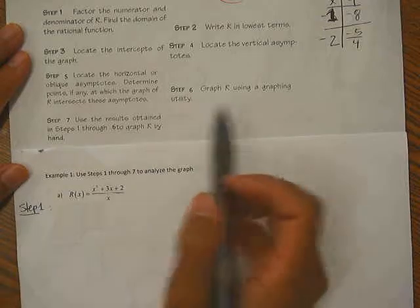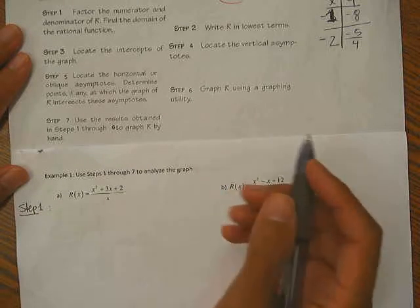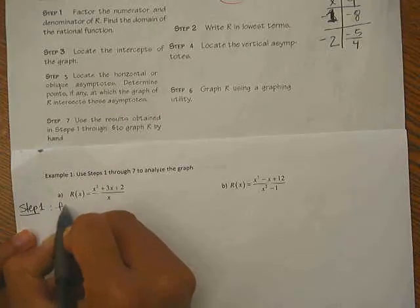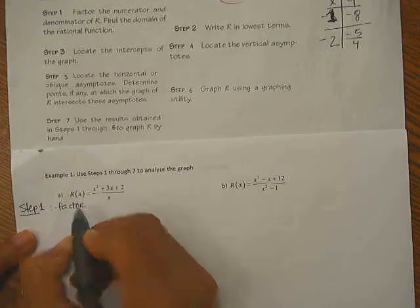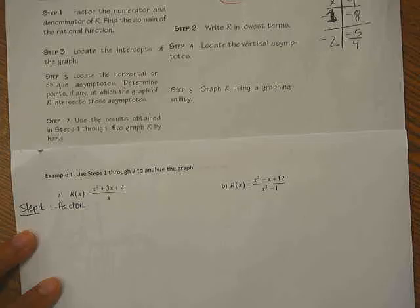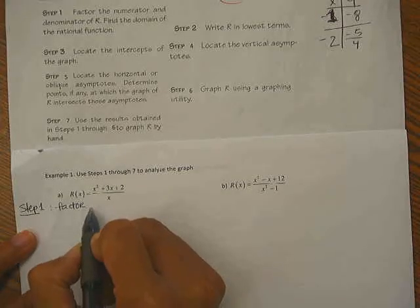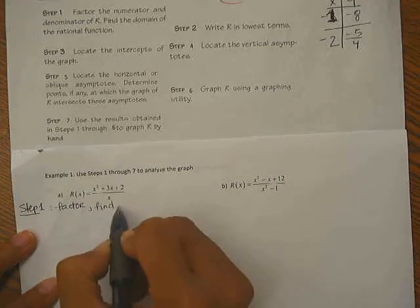Step number 1. It says factor the numerator and denominator and find the domain of the rational function. So we are going to quickly write down words that will help us remember later what to do: factor and then find domain.